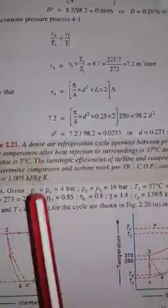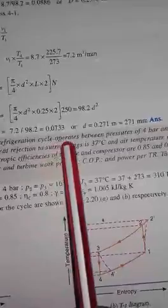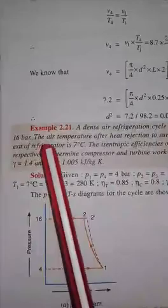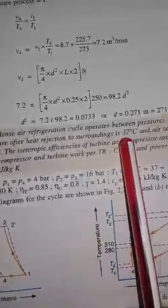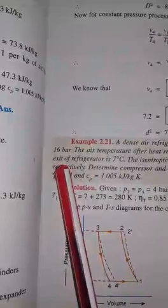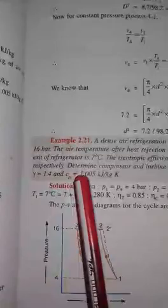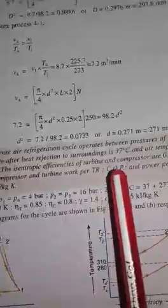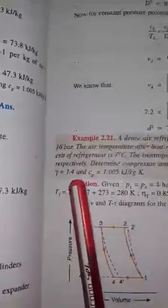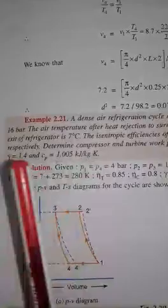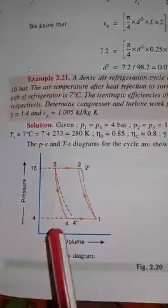I am going to record a video lecture on the Bell-Coleman cycle. A dense air refrigeration cycle operates between pressures of 4 bar and 16 bar. The air temperature after heat rejection to surroundings is 37°C, and the air temperature at exit of the refrigeration is 7°C. The isentropic efficiency of the turbine and compressor are 0.85 and 0.8 respectively. We need to determine the compressor and turbine work per ton, COP, and power per ton. Gamma is 1.4 and Cp is 1.005 kJ/kg·K.